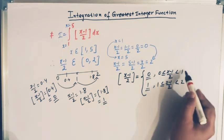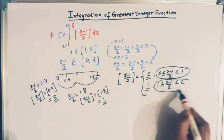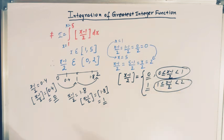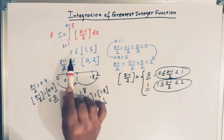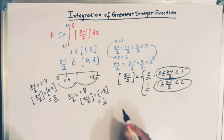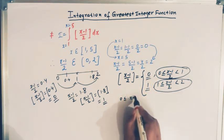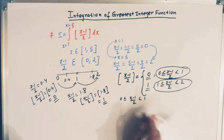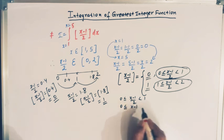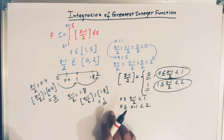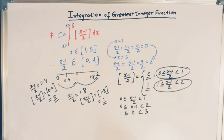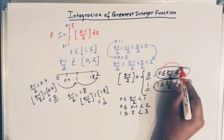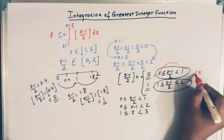Our next aim is to solve these two inequalities for x — we need to express each inequality as an interval in which x belongs. Taking the first one: 0 ≤ (x minus 1)/2 < 1. Multiplying throughout by 2 gives 0 ≤ x minus 1 < 2, and adding 1 throughout gives 1 ≤ x < 3.